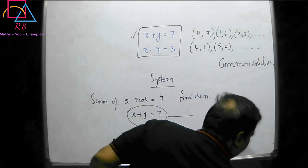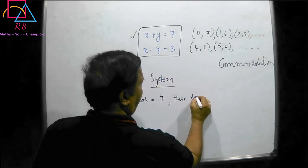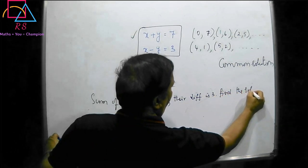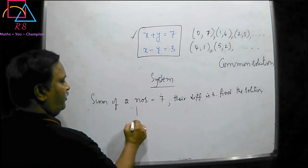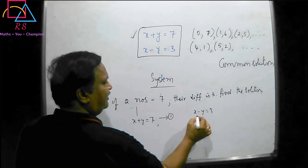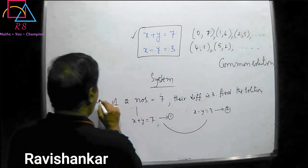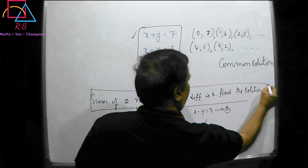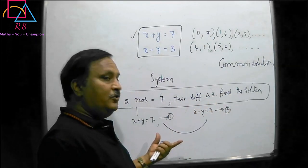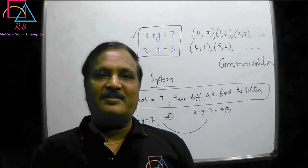Suppose there is one more condition — their difference is equal to 3. Then find the numbers. So here you will be getting x plus y is equal to 7, and x minus y is equal to 3. This is equation 1 from condition 1, and equation 2 from condition 2. These two make one system. This entire problem should have two equations to get a unique solution. So this is what a system of linear equations in two variables is.